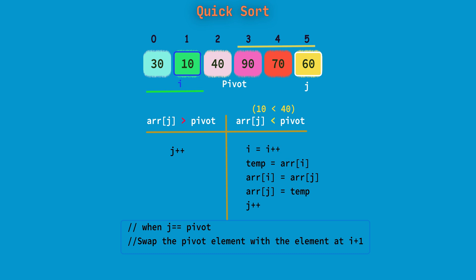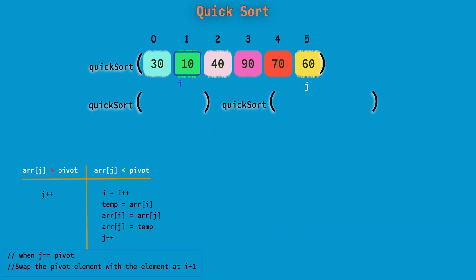Now independently for both the partitions, the process of choosing the pivot element and sorting the elements around the pivot element will continue until every partition array size reaches to 1. So continue this process on these partitions.